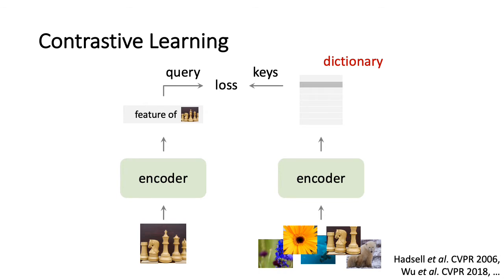Unlike the scenario in NLP, the dictionary in computer vision is not readily available. Instead, the dictionary is computed on the fly dynamically. By applying an encoder to a set of image samples, the dictionary lookup problem happens in the feature space. This methodology is known as contrastive learning, which dates back to at least CVPR 2006.